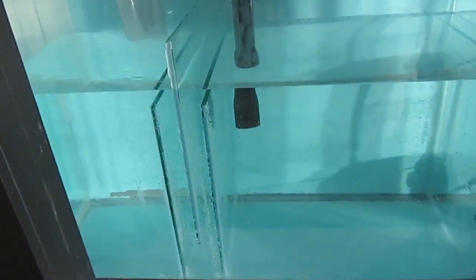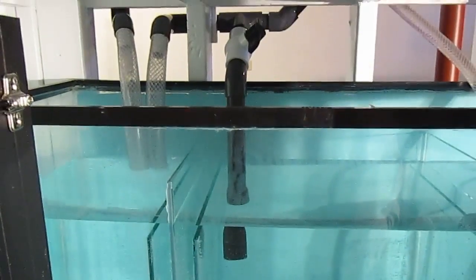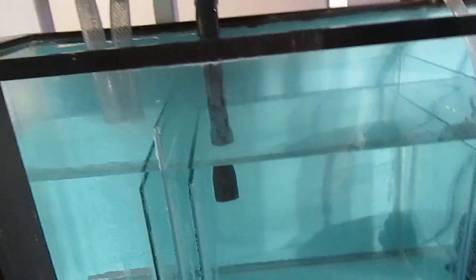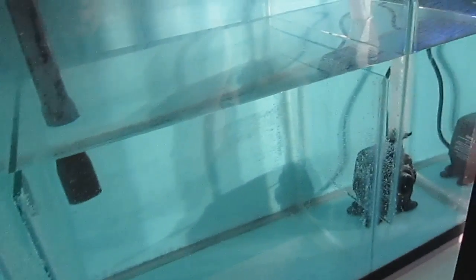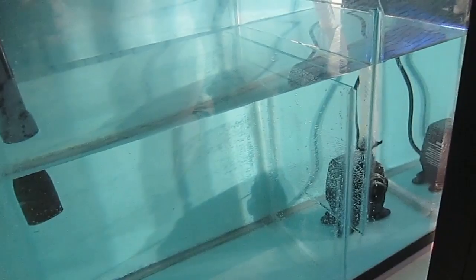The middle section is, of course, the refugium. And you can see my line coming down there for the unskimmed water with a ball valve so I can control that flow. And finally, the third compartment there is the return pump, smallest compartment.